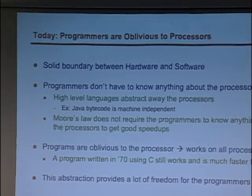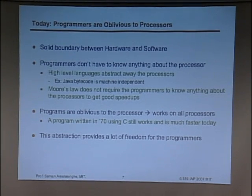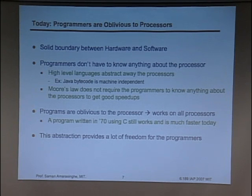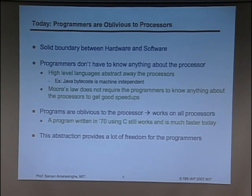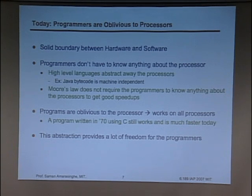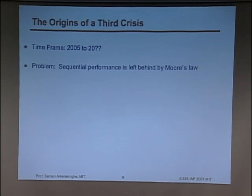So here we are today — we are very happy, lots of programmers. Unfortunately, programmers are pretty oblivious to what's happening in hardware. We don't care. We have these nice virtual machines, and if you want speed, just wait six months — the machines will be faster. Programs written even in the 70s still run probably two or three orders of magnitude faster, because processors today are literally faster. This abstraction gave us a huge amount of power. The problem is we are running into issues here. We are at the beginning of this third software crisis.